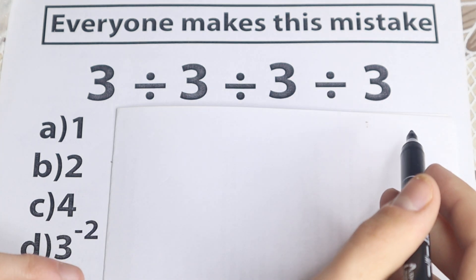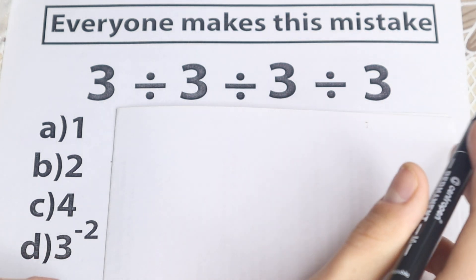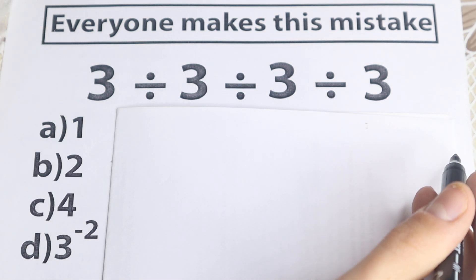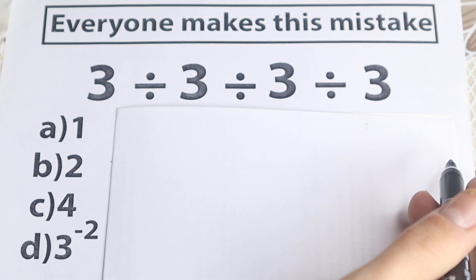3 divided by 3 divided by 3 divided by 3. No parentheses, no squares, no cubes and as you can see no fraction, only 3 and division. I suggest you choose an option. What do you think is the correct option? In just 30 seconds we will check our answer. It will be really interesting.